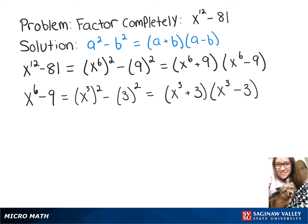So now our whole answer of x to the 12th minus 81 factored is x to the 6th plus 9 times x to the 3rd plus 3 times x to the 3rd minus 3.